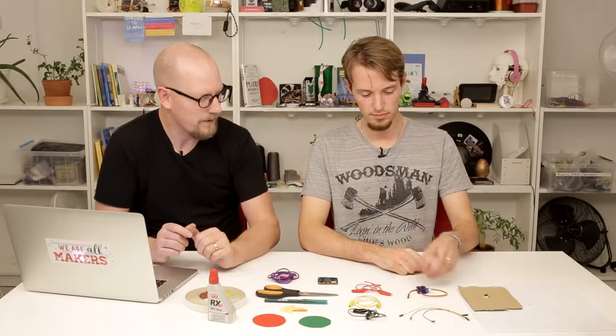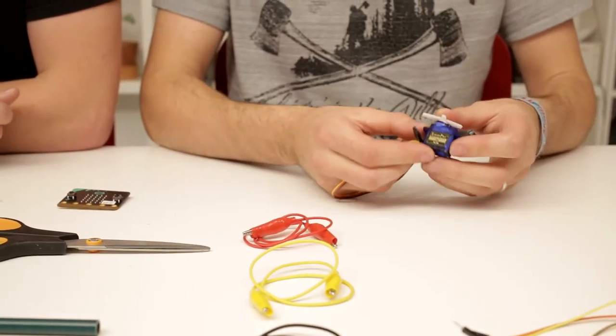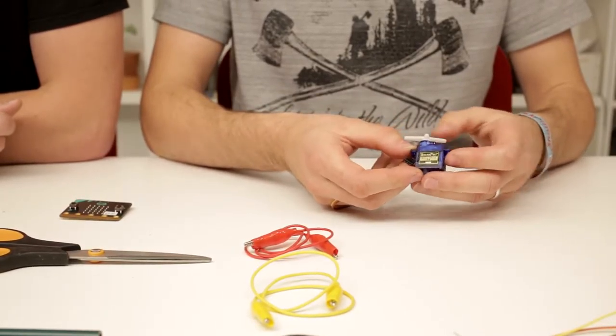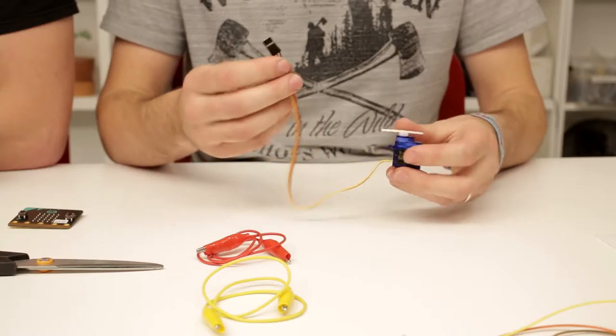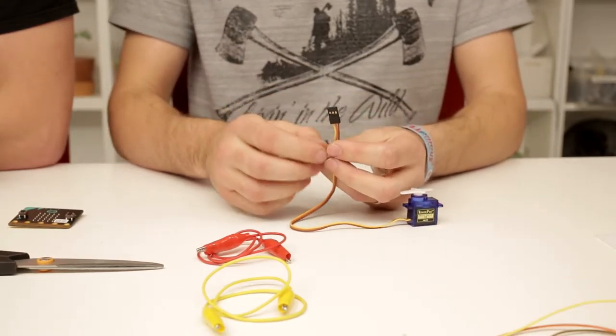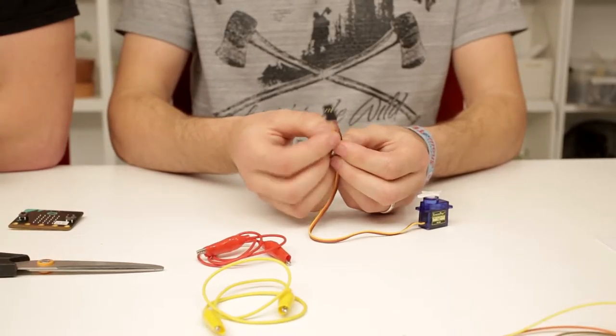Where do we start? Well, we could start with connecting together the electronics. First the electronics, then the programming, and then the aesthetics after that. So we have this little servo over here—it's actually a small version. As you can see, it has three cables coming out, colored brown, orange, and yellow.